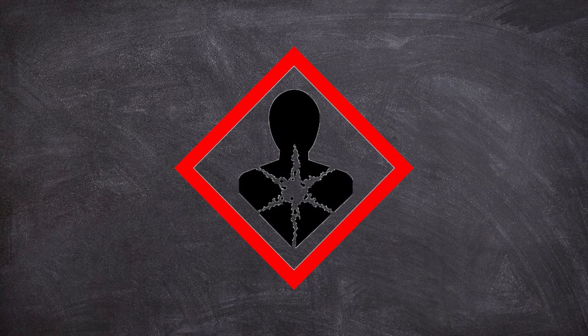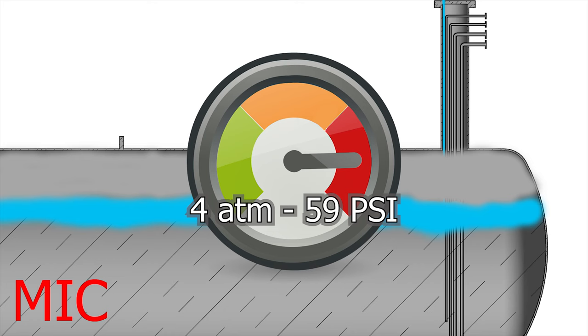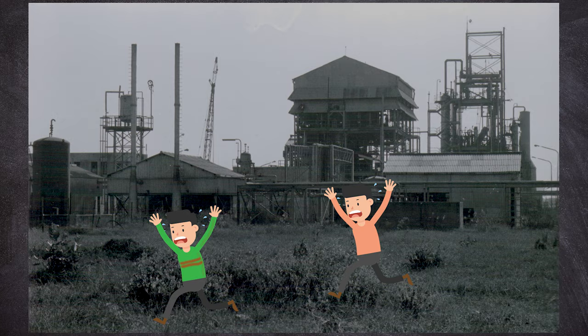However, none of the personnel was fully aware of the dangers of the gas stored underground, so that only after midnight, when the pressure gauges showed 59 psi, a value 27 times higher than normal, was the alarm given, with the activation of the sirens of the plant, which was hastily evacuated.